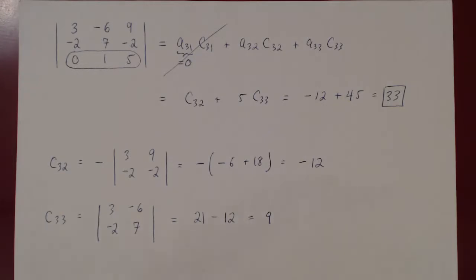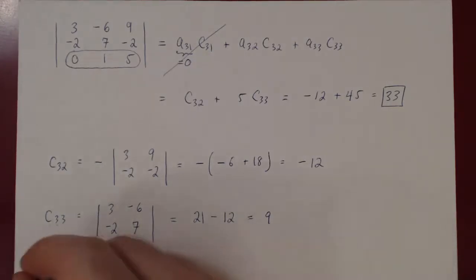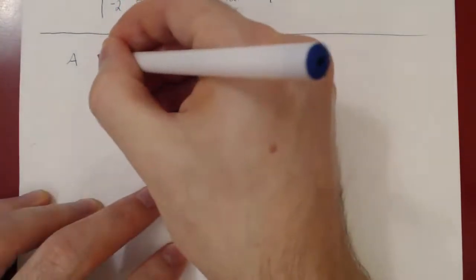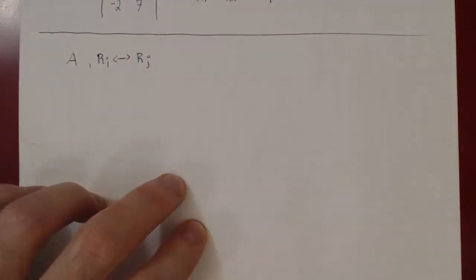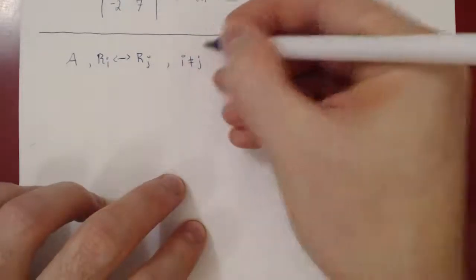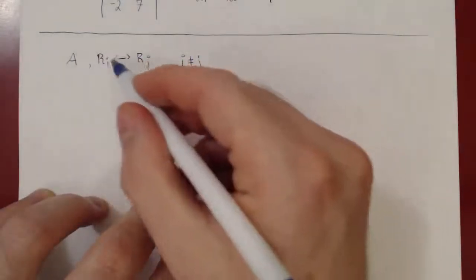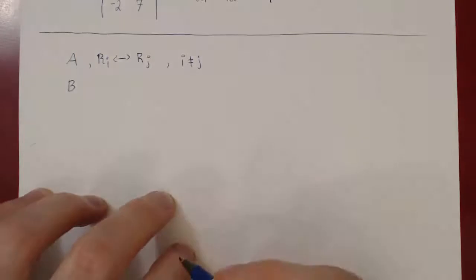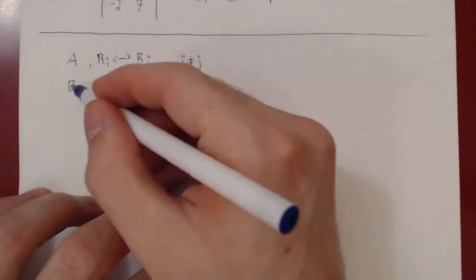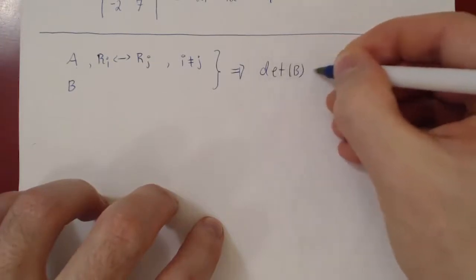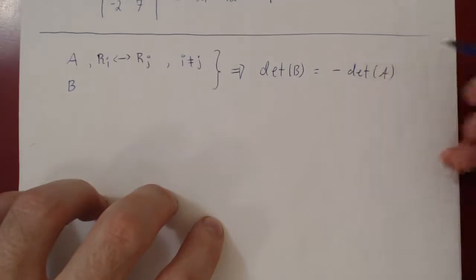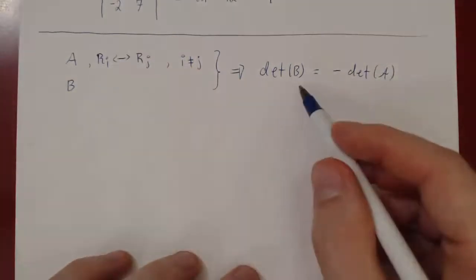We have three types of row operations — how will they affect the determinant? Suppose you have a square matrix A. The first type is swapping two rows: swap row i with row j where i ≠ j. You take matrix A, swap two of its rows to get a new matrix B. The determinant of B is the negative of the determinant of A. So if you swap two rows of a matrix, the determinant becomes negated.